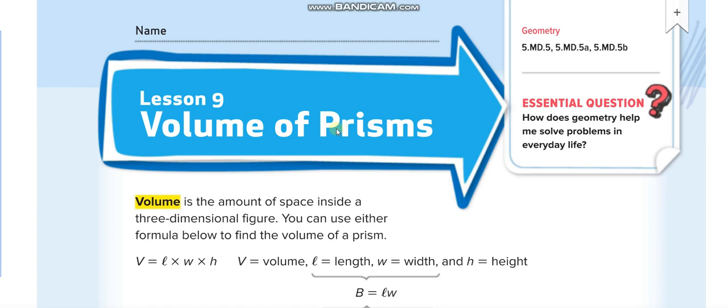Today we will talk about the volume of prisms. Volume is the amount of space inside a three-dimensional figure. I told you in the last lesson that when you have a two-dimensional figure, we just have length and width.